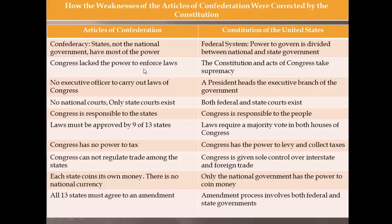Under the old government, Congress lacked the power to enforce laws. Today, our constitutional congressional laws take supremacy — they are enacted, enforced, and must be followed by the citizenry. Under the Articles, there was no executive officer, no leader of the nation. The fix: today we have a president. The old government also had no national courts — only state courts existed. Today we have federal courthouses, state courthouses, and courts at every level of government.